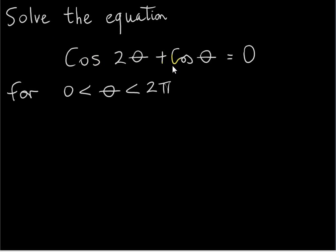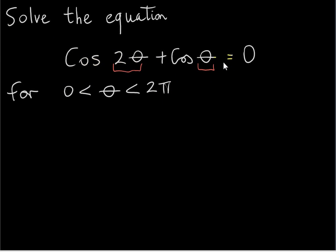Solve the equation cos 2θ + cosθ = 0 for θ between 0 and 2π radians. Notice that we have a double angle appearing in this equation, and also a single angle θ. The functions are both cosine functions. We normally try to get all the functions the same or all the angles the same, so here we're going to try to get the angles the same. We'll use a double angle identity for cos 2θ so that we have functions of 1θ instead of 2θ, and then all the angles will be 1θ.